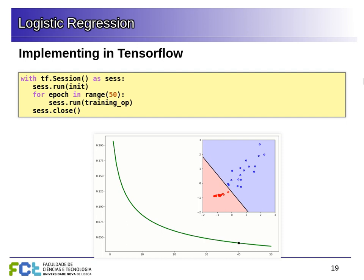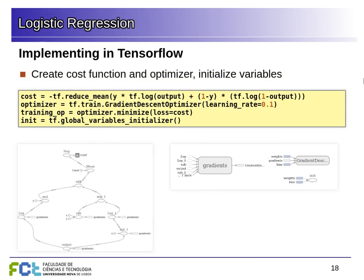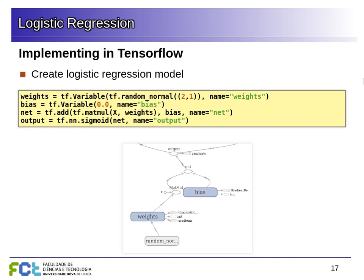Regarding how you would do inference with this: after training, you have the variable values set. The initialization gives random values to the variables, but each training step adjusts them. When you finish training, all variables have the correct values. At that point, you could compute the output for new examples. However, it wouldn't work directly here because everything is done with constants — you would need to create a new operation with new constants. We'll see next week that you can use placeholders to feed in data before computing the graph, allowing you to run just the output operation on new data.